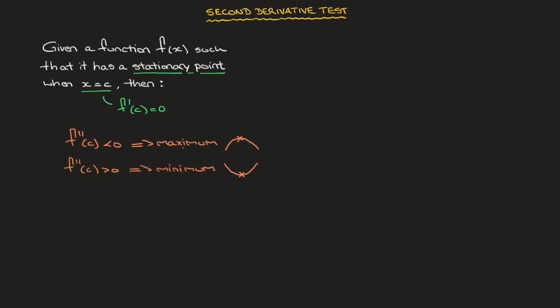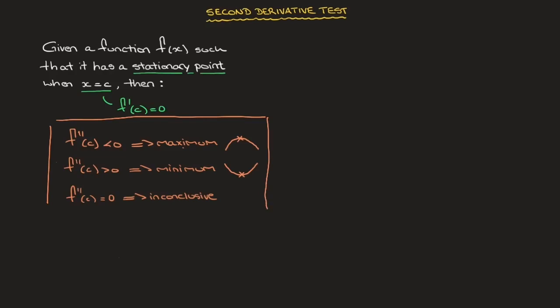Last but not least, if f''(c) is equal to 0, then the second derivative test is inconclusive. In other words, we can't draw any conclusions about the nature of the stationary point if the second derivative equals 0. When that happens, we study the sign of the first derivative to classify the stationary point. Together, these three results form the second derivative test.